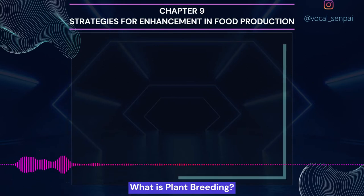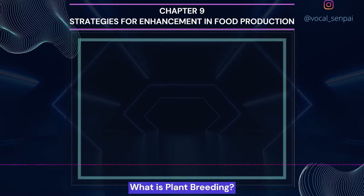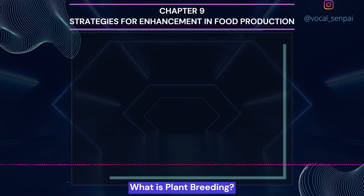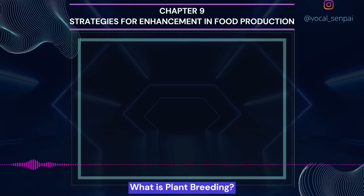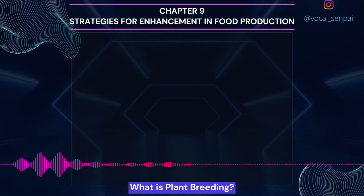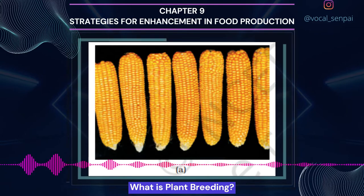Plant breeding programs are carried out in a systematic way worldwide. The main steps in breeding a new genetic variety of a crop are: First, collection of variability. Genetic variability is the root of any breeding program. In many crops, pre-existing genetic variability is available from wild relatives. Collection and preservation of all the different wild varieties, species, and relatives of the cultivated species, followed by their evaluation, is a prerequisite. The entire collection of plants' seeds having all the diverse alleles for all genes in a given crop is called germplasm collection.